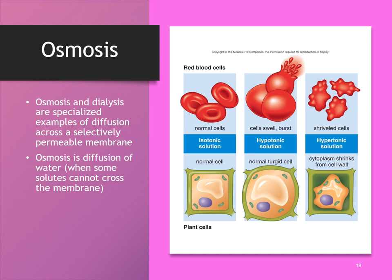When we talk about concentrations of fluid outside the cell, there are three ways we refer to them: isotonic, hypotonic, and hypertonic. When we have an isotonic solution, the salt concentration outside the cell is exactly the same as inside the cell — nothing happens and the cell is perfectly normal. This is why we use 0.9% sodium chloride to irrigate wounds, as it's the closest concentration to what is inside our cells.